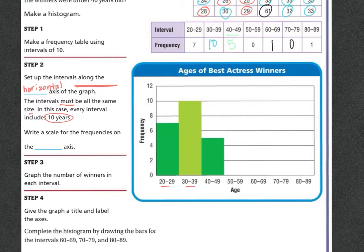Write a scale for the frequency on the vertical axis. So the vertical axis is this way. So there's our frequency going this way. Our age is this way. Vertical is the other way.